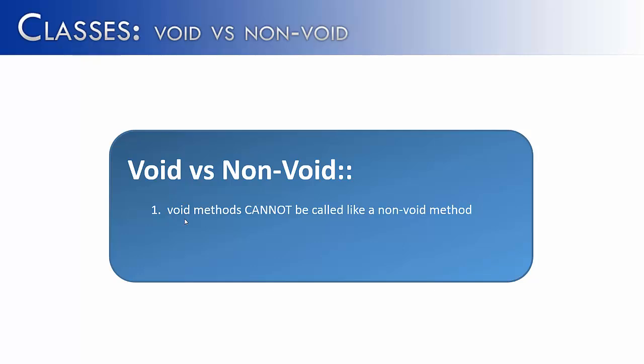So to sum it up, void methods cannot be called like a non-void method. So if you have a void method in a programming statement, it is wrong, it will produce an error, and your code will not run. And then secondly, non-void methods can and occasionally will be called like void methods. Like we gave you in the examples above, the add method of the ArrayList class. That's a non-void method, but it's often used like a void method.